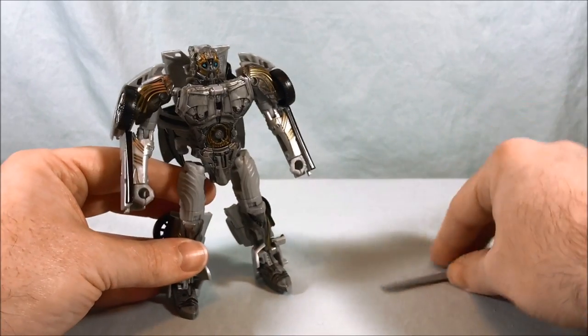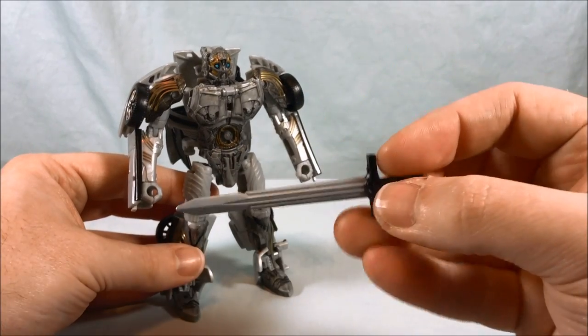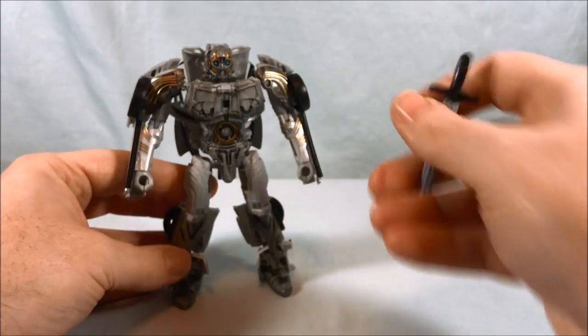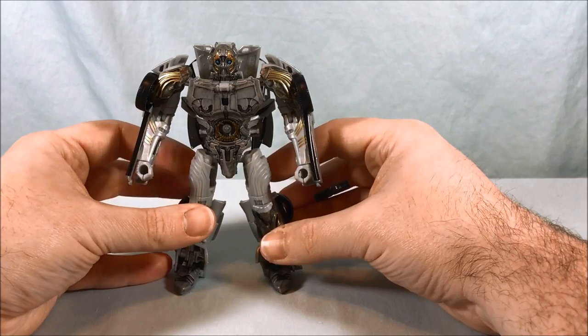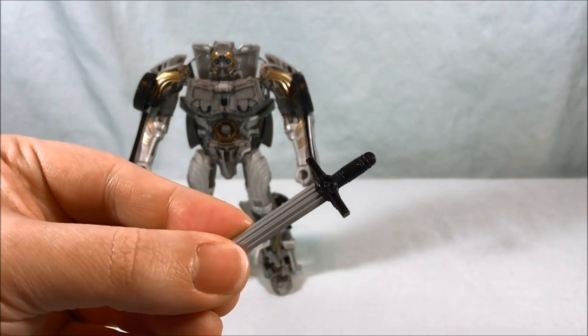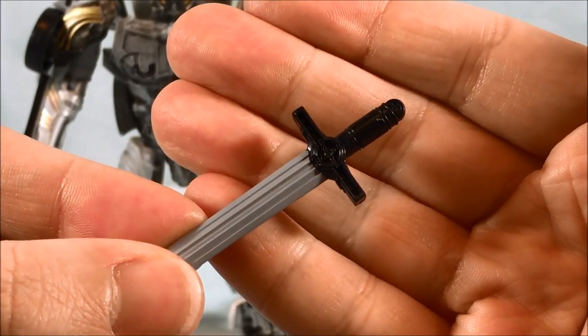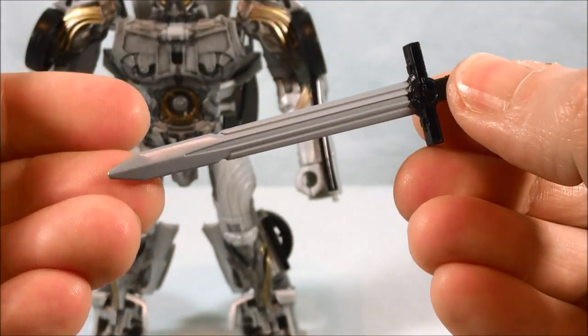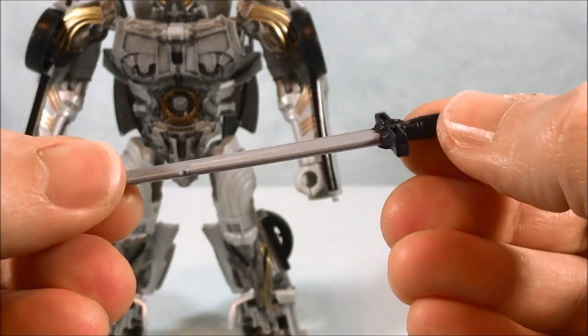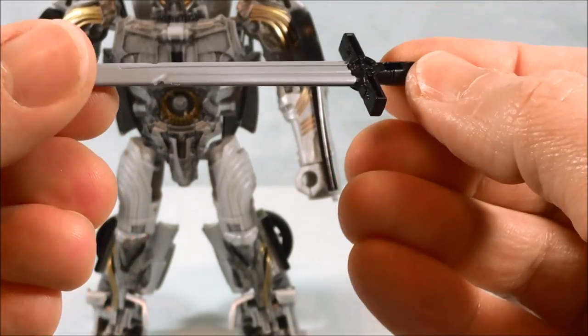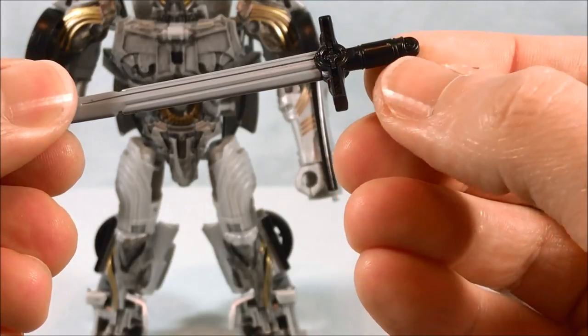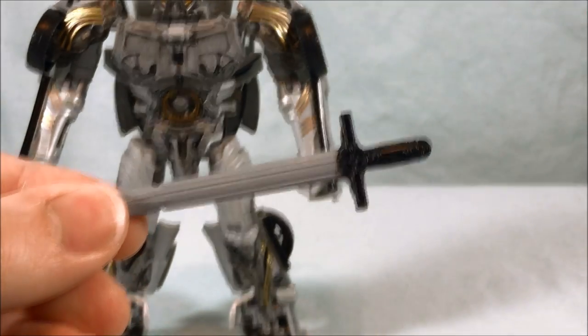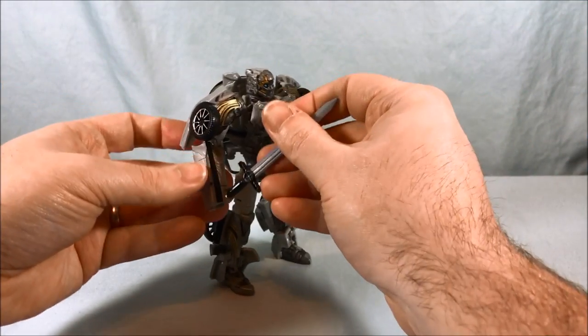He comes with this sword which is very reminiscent of the design of all those swords we saw in the movie. I'll get a little closer so you can see the hilt - all those Knights of the Round Table swords. It's fairly simplistic but the paint looks good. It might actually be two different pieces of plastic. It's a nice looking sword, I like it. It pops right into his hand, not too difficult.